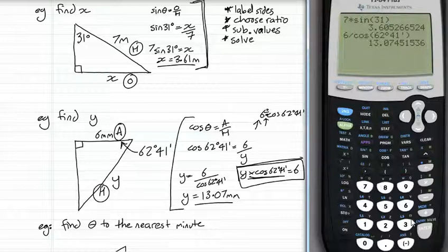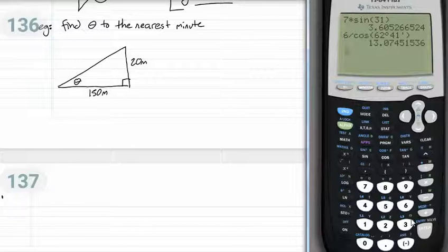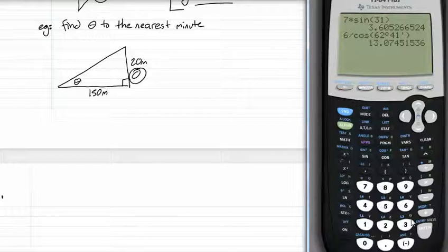Last question. Finding angles. We still use those same steps. First step. Label sides. I've got opposite and I've got adjacent. That tells me I've only got one ratio I can use. It's tan. Tan theta equals opposite over adjacent.